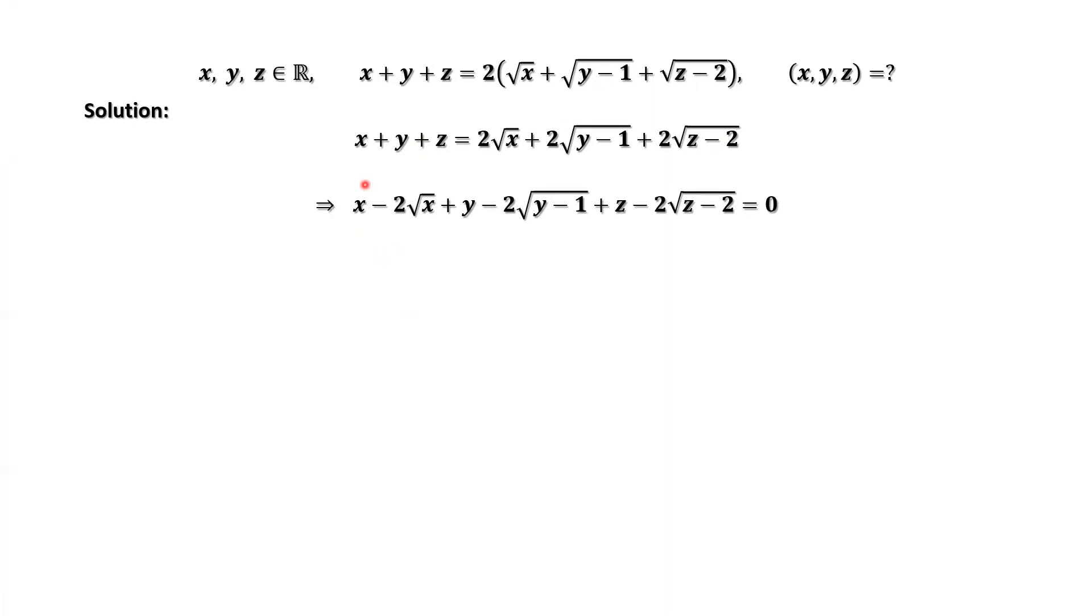We are trying to group different variables. For example, put all x terms together, y terms together, and z terms together. Why are we doing this? We want to make complete squares for each term: x terms, y terms, z terms.